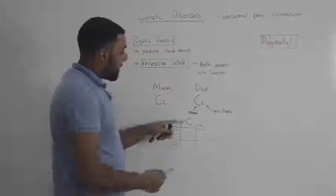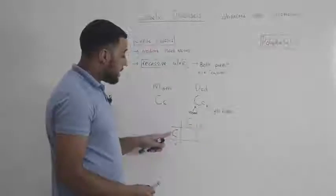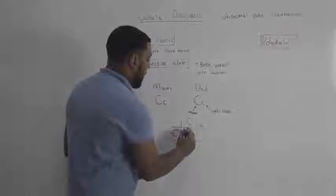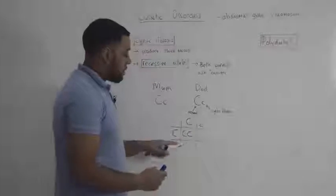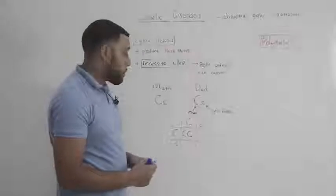And if this allele and this allele combine, then we will get capital C capital C. So this child would be classed as healthy.